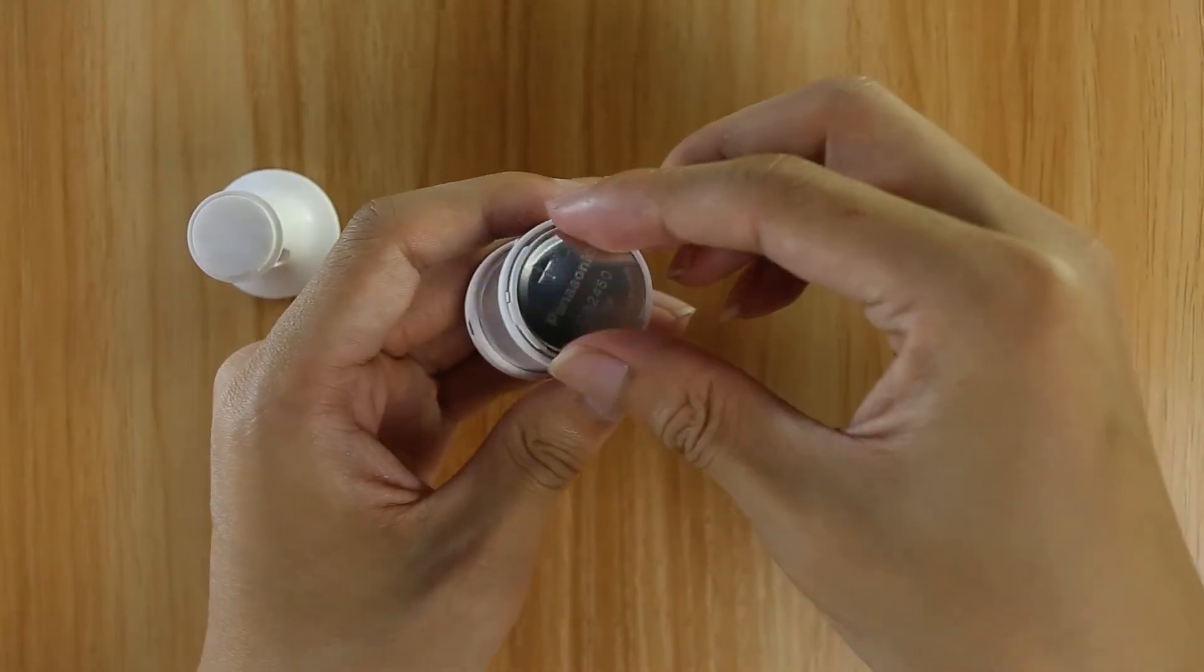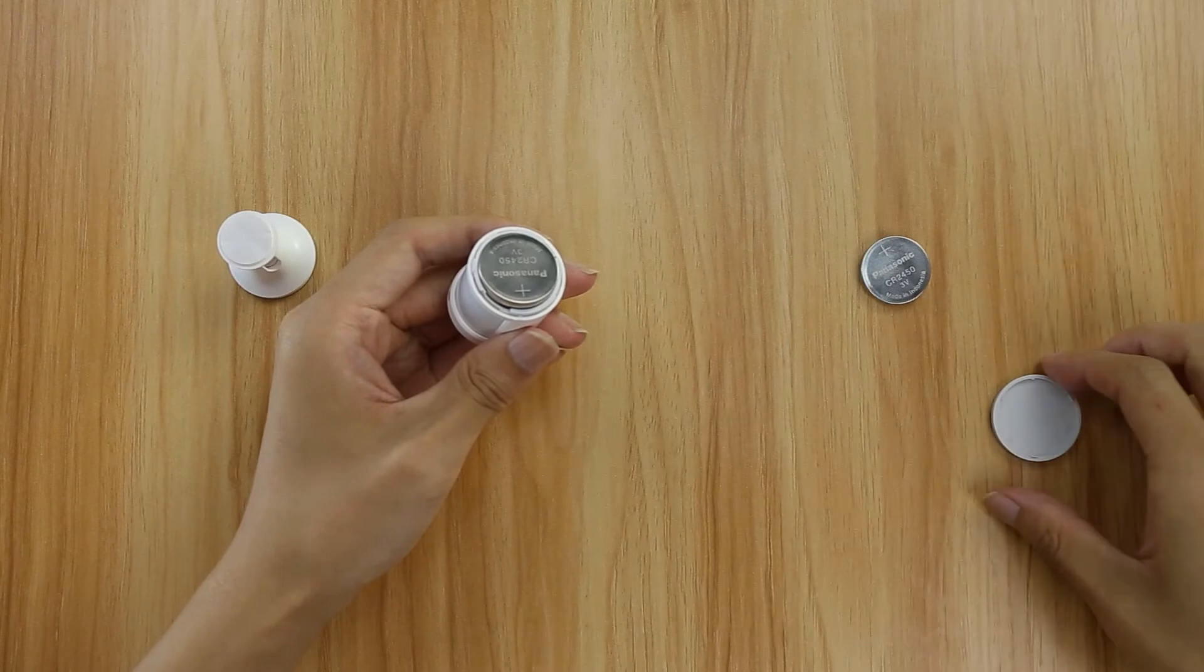Place the new button cell battery in the battery slot and pay attention that the positive side of the battery should face upwards.